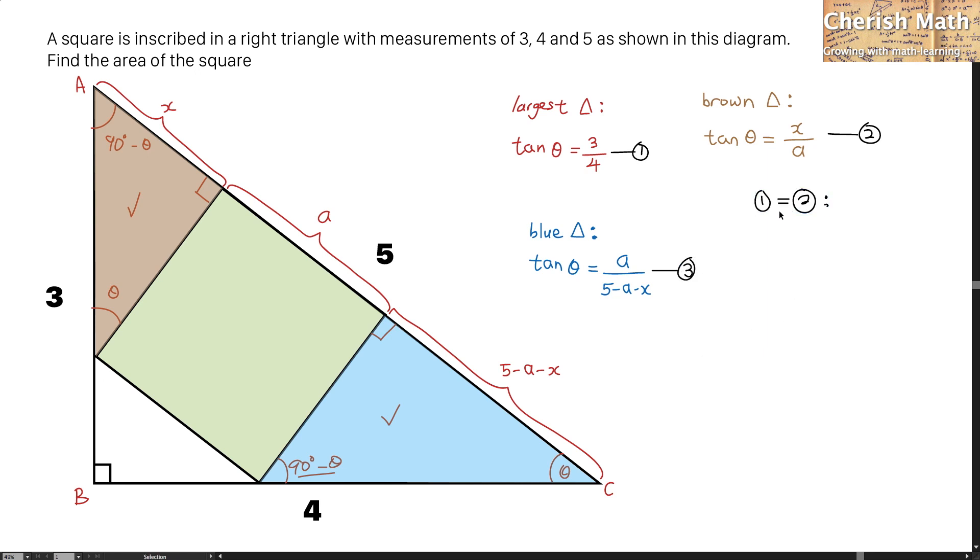By equating the first and second equation, this is what I get. And the value of the X is 3 quarters times A.